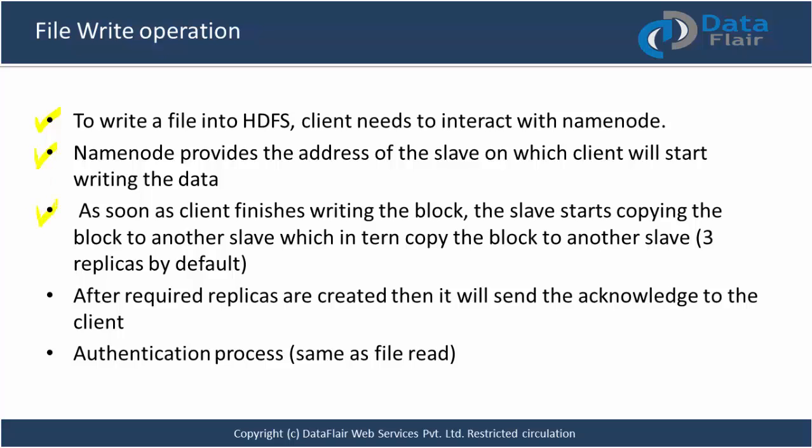The client won't send three copies even if the replication factor is three - the client will send just one copy. If the client sent three copies, it would be overhead on the network. If you want to write 10 TB of data, you'd have to send 30 TB. As soon as the client finishes writing the block, the slave starts copying the block to another slave, which in turn copies to another slave. If the replication factor is 10, the slave will automatically create nine more replicas. After the required replicas are created, the acknowledgement is sent to the client.